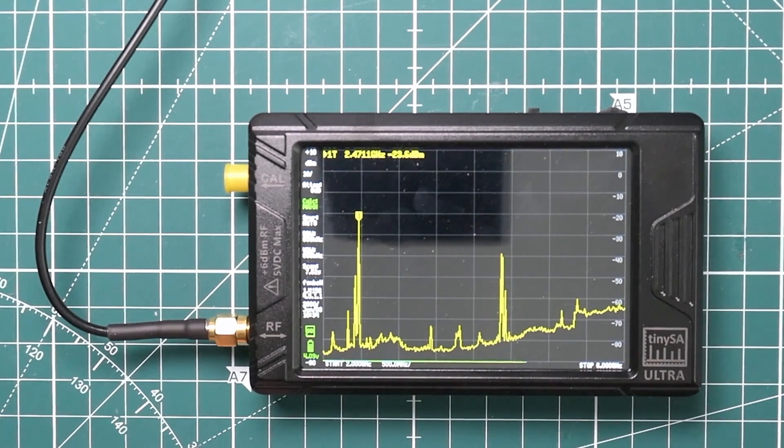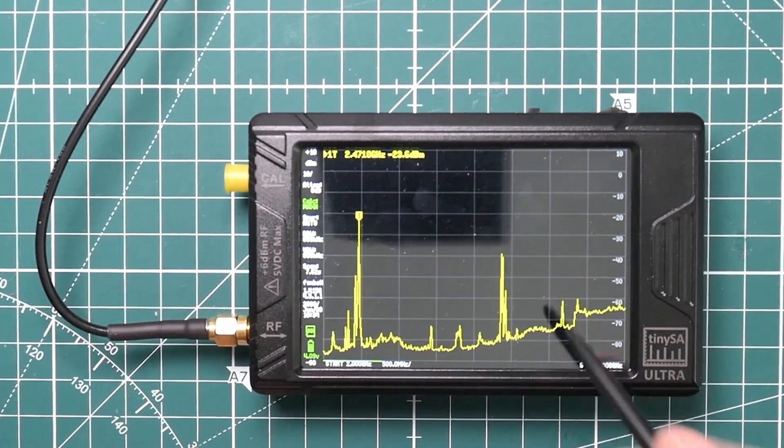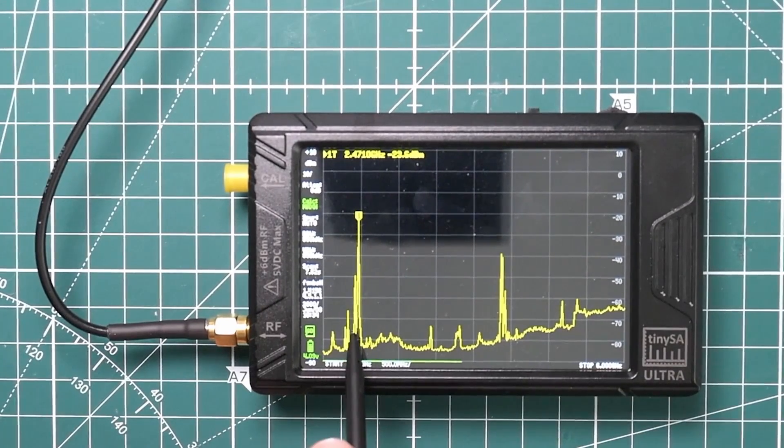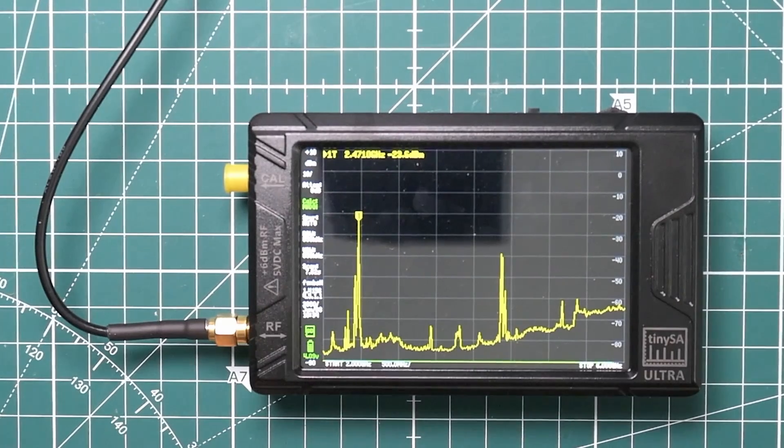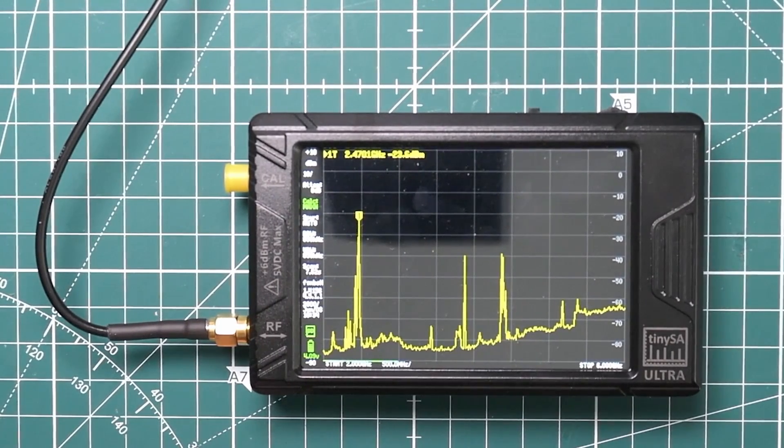So there's loads of different Wi-Fi devices. Some are on the 5 gigahertz, which is up here. Some are on the 2.4 gigahertz down here. There's my neighbors. There's probably 20 different Wi-Fi channels all being used around here.